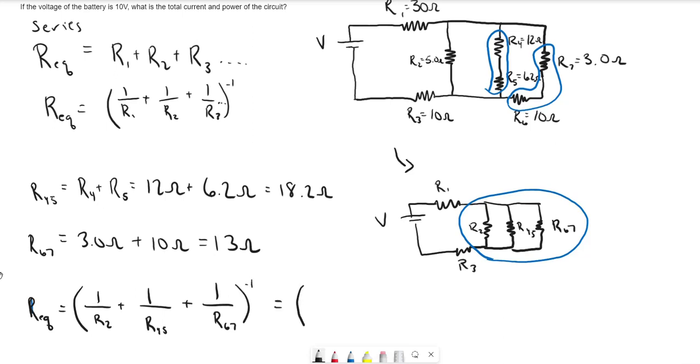So plugging in the values, that's 1 over R2, which is 5.0 ohms, plus 1 over 18.2 ohms plus 1 over 13 ohms. Don't forget to take the inverse.